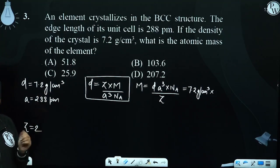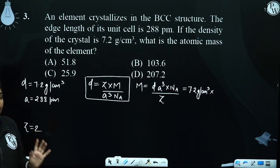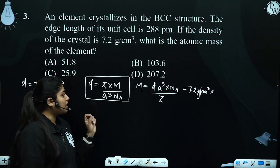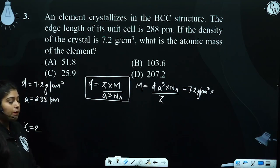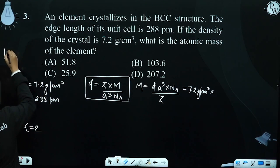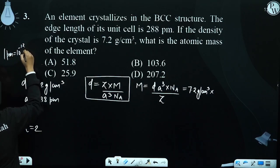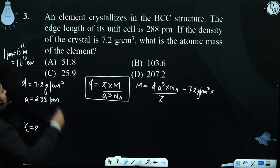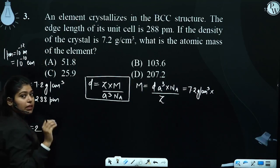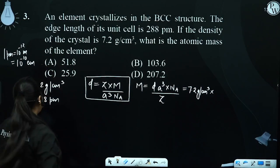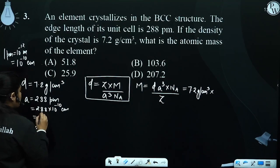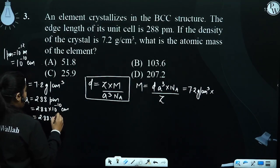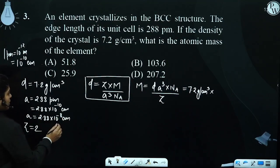The edge length is given in picometers, and the density is in centimeter cube. 1 picometer equals 10 to the power minus 10 centimeter. So 288 picometers becomes 2.88 into 10 to the power minus 10 centimeter, which is 2.88 into 10 to the power minus 8 centimeter. This is our edge length in centimeters.